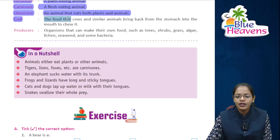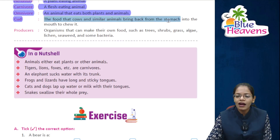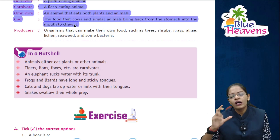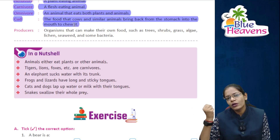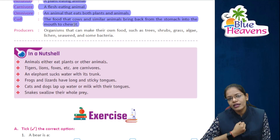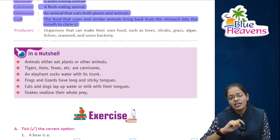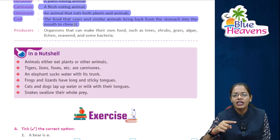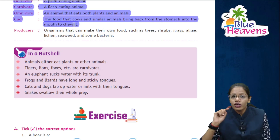Cud means the food that cows and similar animals bring back from the stomach into the mouth to chew it. Animals swallow food and take it to the stomach, then bring it back to the mouth to chew — these are called ruminants.